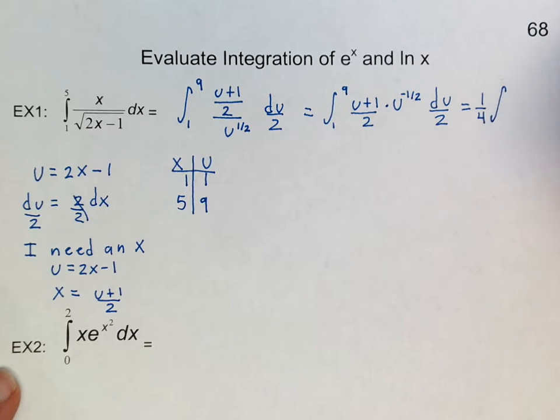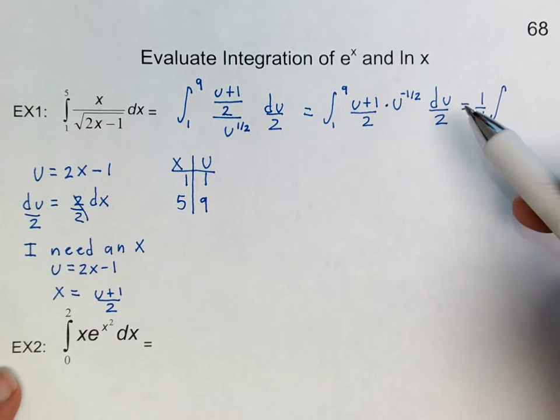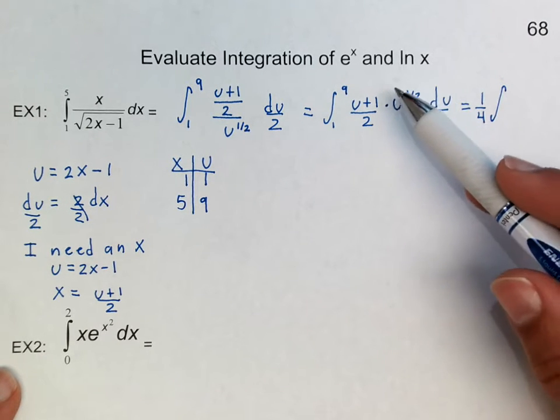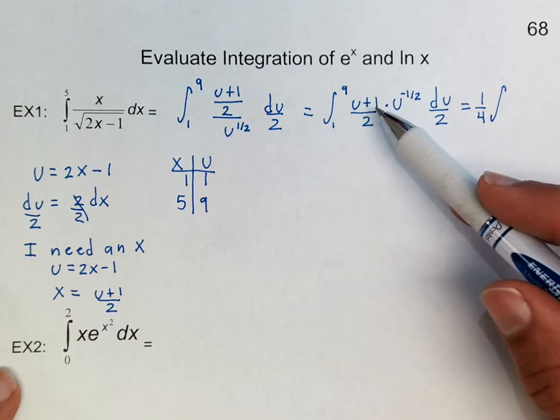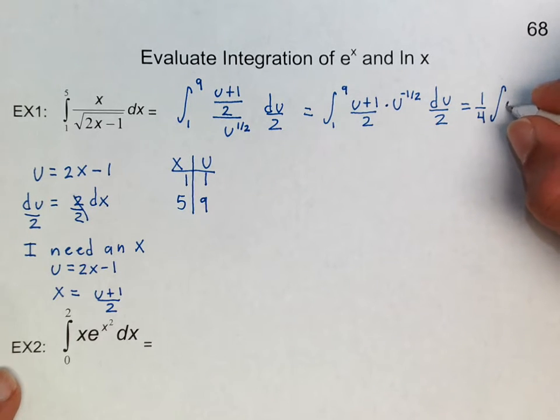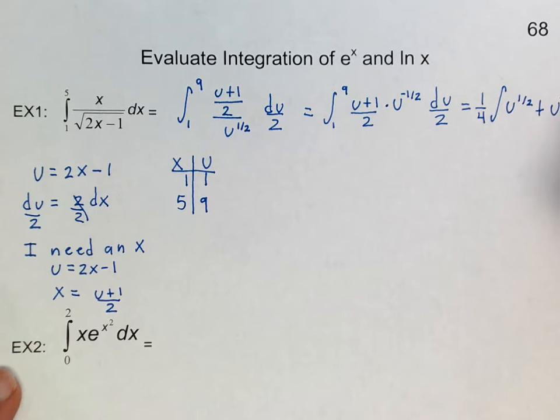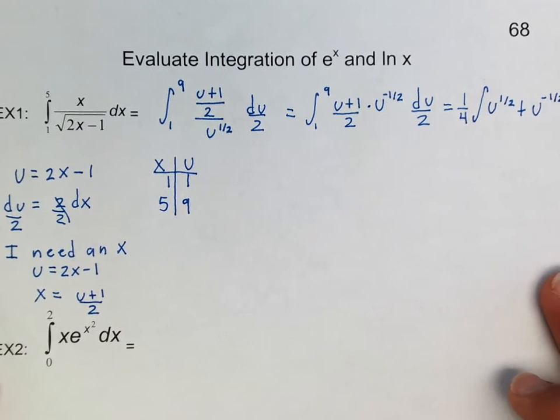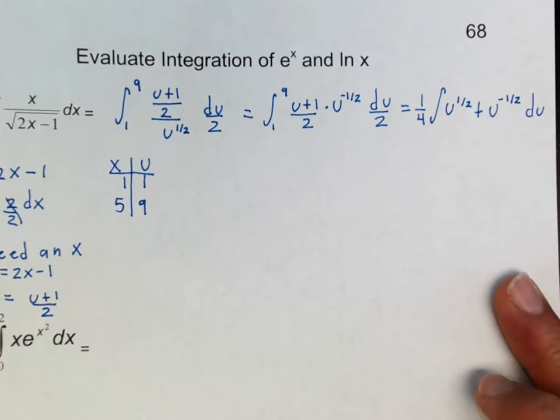And now what I'm going to do here is I'm going to distribute this u to the negative 1 half among that one and that one. So this will be u to the negative 1 half du.